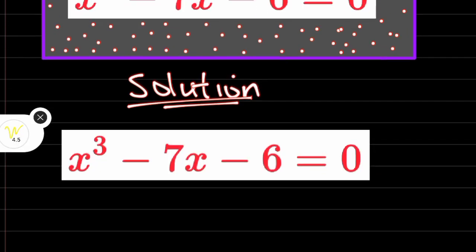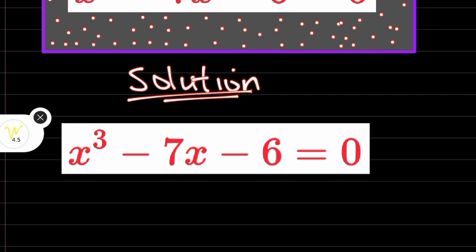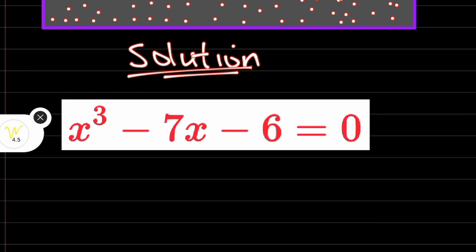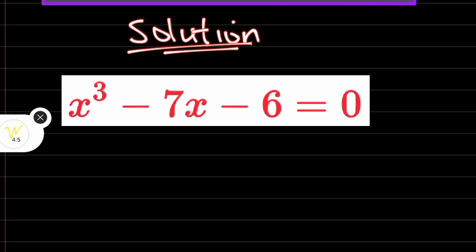This is the given equation that we want to find the root. What you should know is that a root is a value that satisfies an equation. There is a particular value that can be placed in place of x such that the whole equation will be equal to 0. That value is a root of this equation — it is a value that satisfies the equation. We call those values the roots.